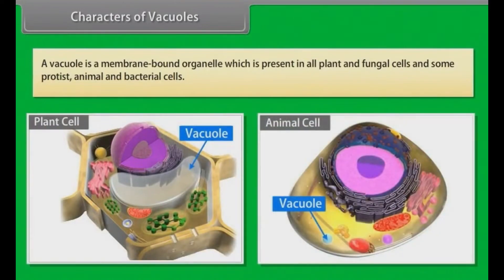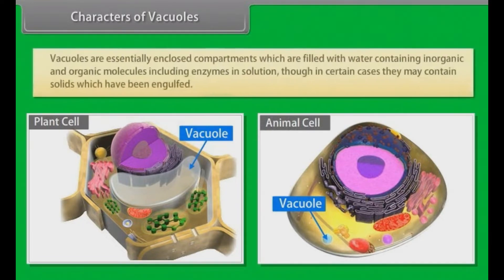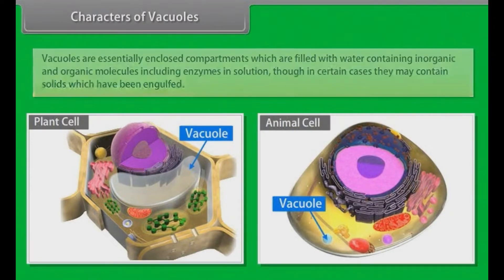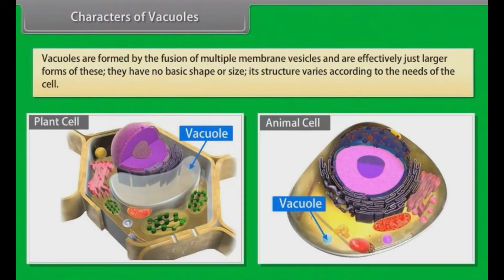Characters of vacuoles. A vacuole is a membrane-bound organelle which is present in all plant and fungal cells and some protist, animal and bacterial cells. Vacuoles are essentially enclosed compartments which are filled with water containing inorganic and organic molecules including enzymes in solution, though in certain cases they may contain solids which have been engulfed. Vacuoles are formed by the fusion of multiple membrane vesicles and have no basic shape or size. Their structure varies according to the needs of the cell.